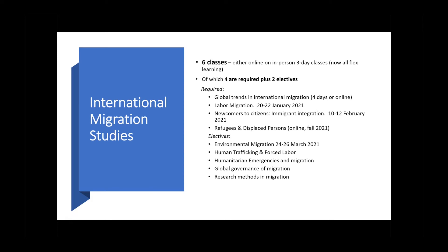The required courses are: Global Trends and International Migration — typically a four-day class giving an overview of different kinds of migration and the big burning issues, offered in-person in the spring or online in the fall or late summer. We also offer Labor Migration, coming up January 20th to 22nd, taught by Lindsay Lowell, a Georgetown professor with extensive experience on labor migration. The U.S. immigration system is very complicated with many types of visas. The course covers recruitment, treatment of migrants, undocumented migrants, and remittances, which are a major source of foreign income for many origin countries.